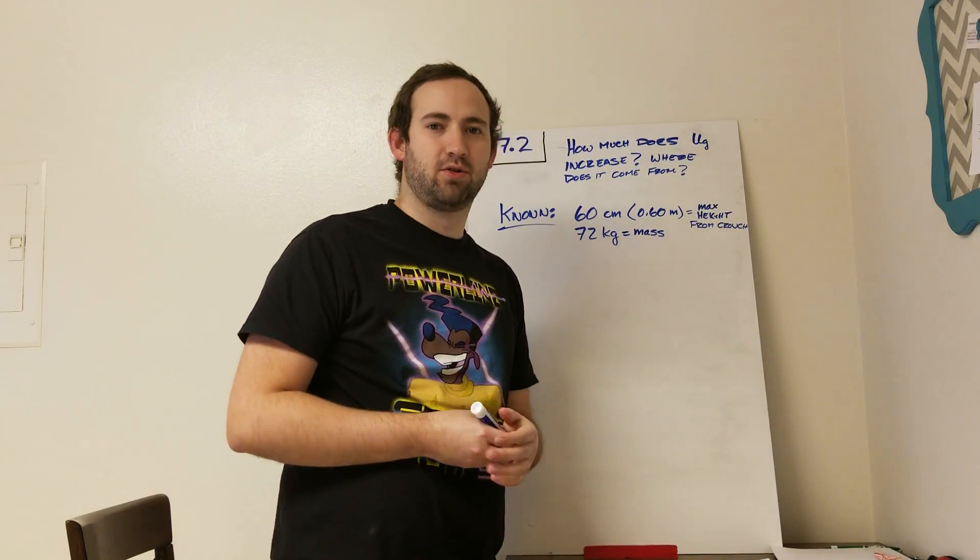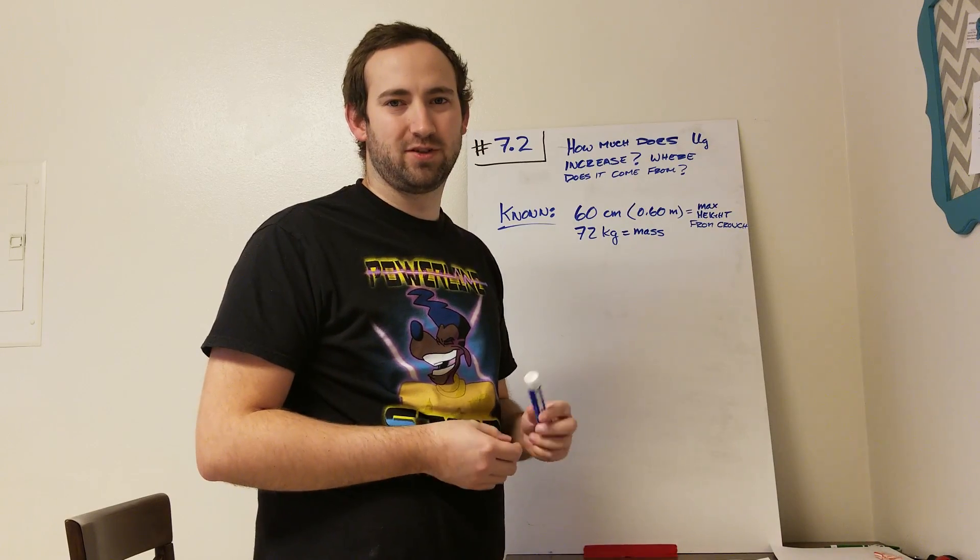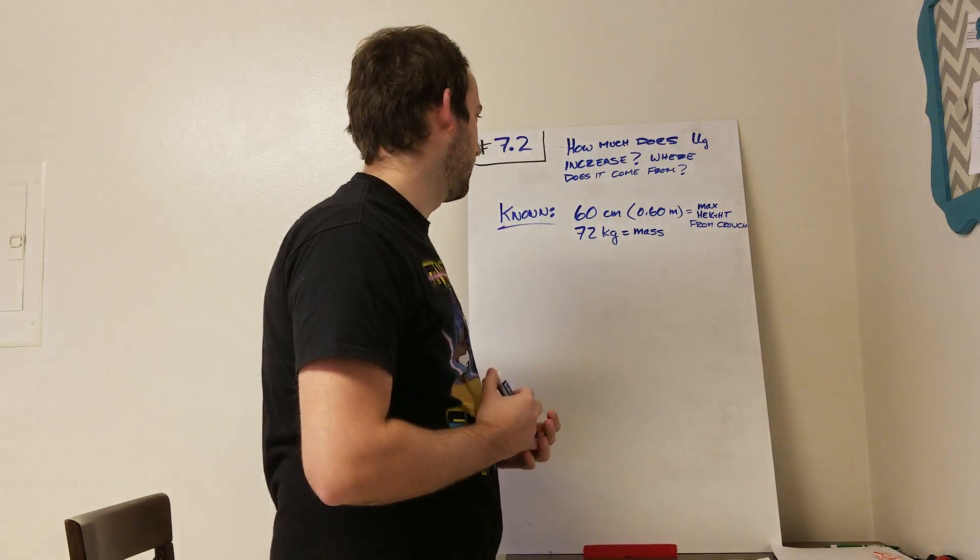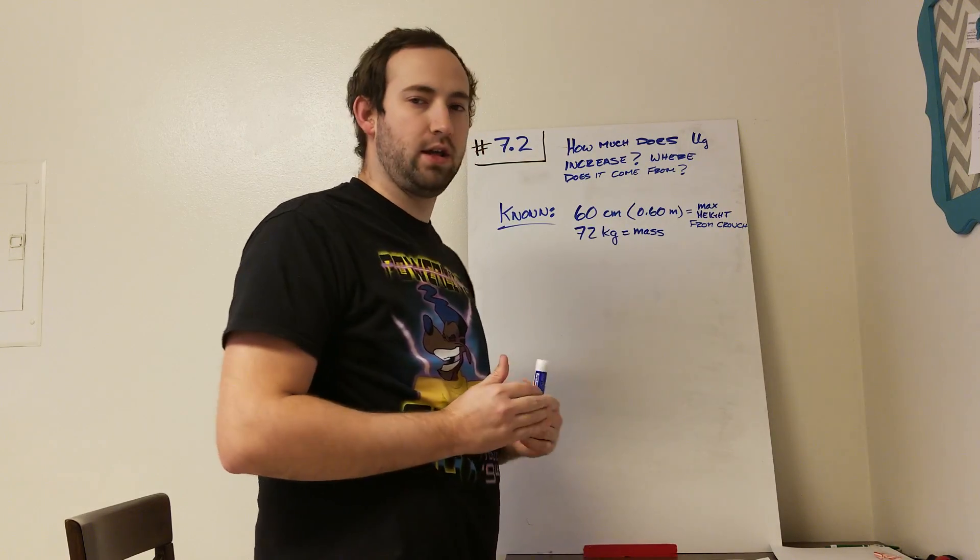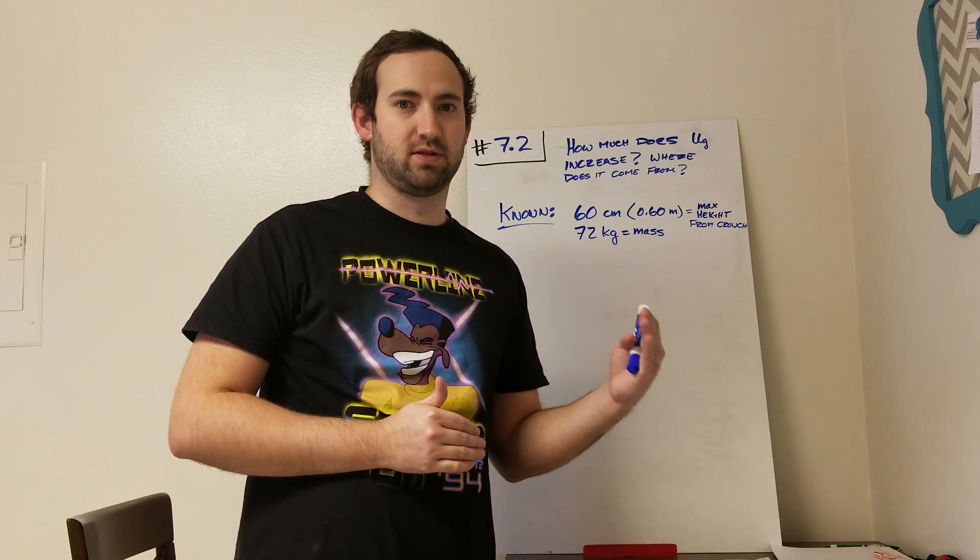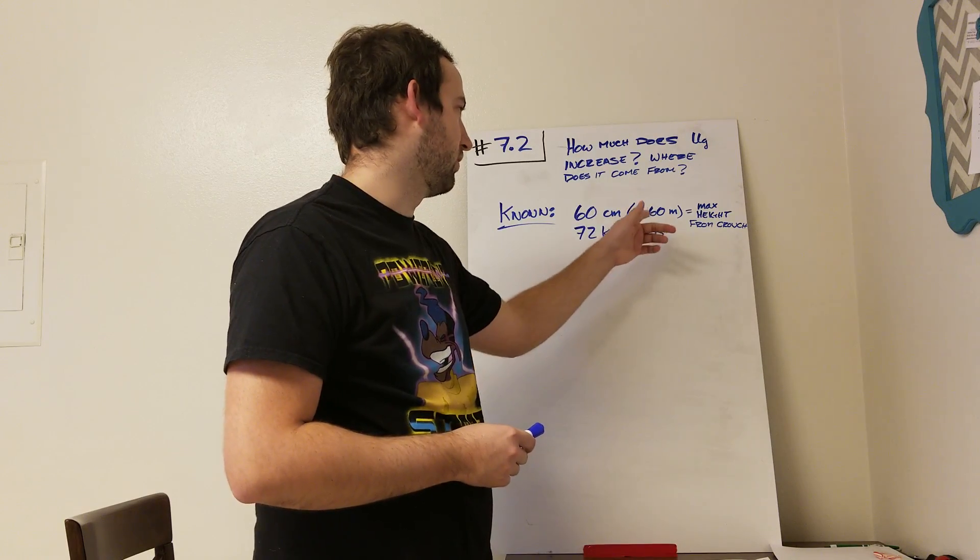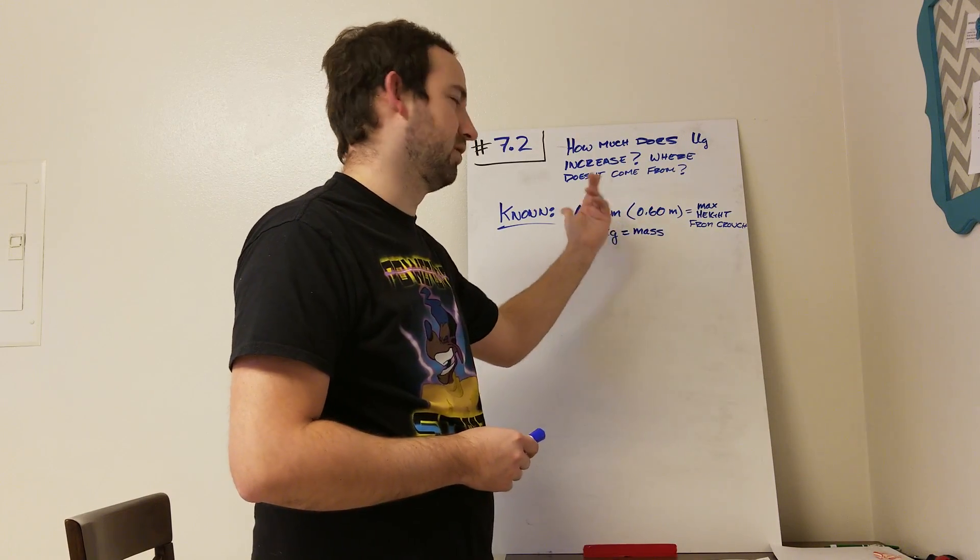Hi everyone. I'm going to be going over question number two from the chapter seven bingo problems. This question has to deal with how high humans can jump from a crouched position, and it says that that's typically about 0.6 meters.